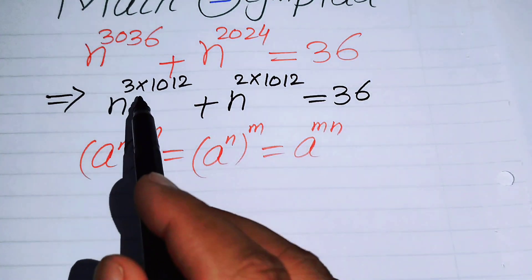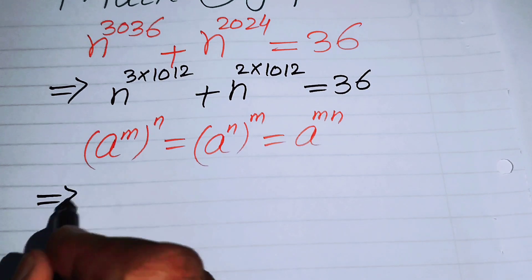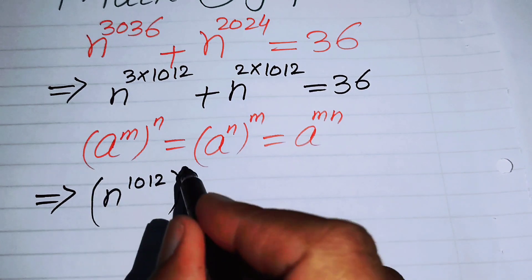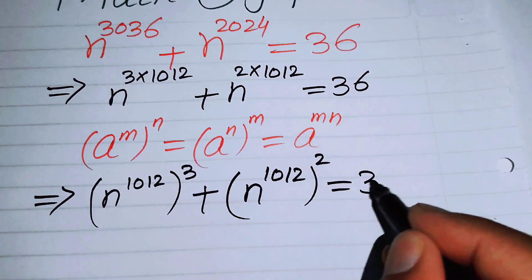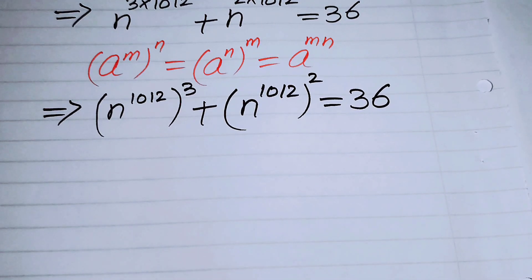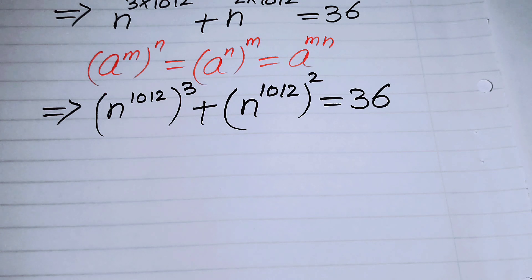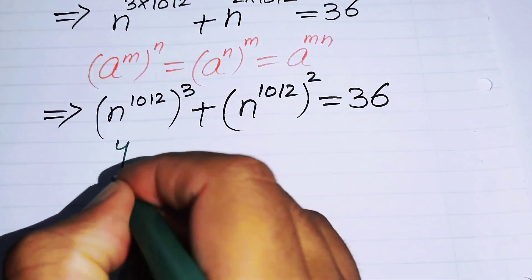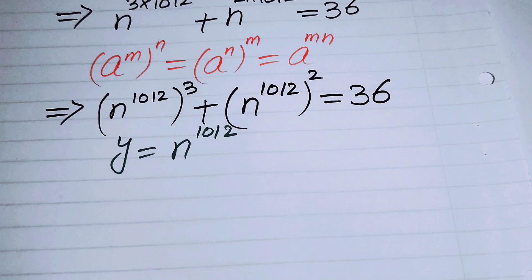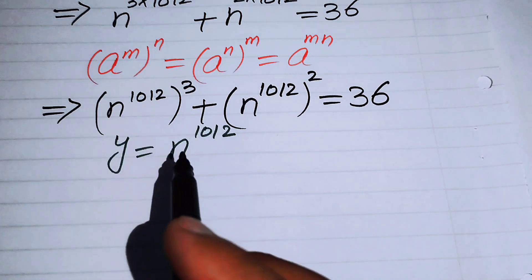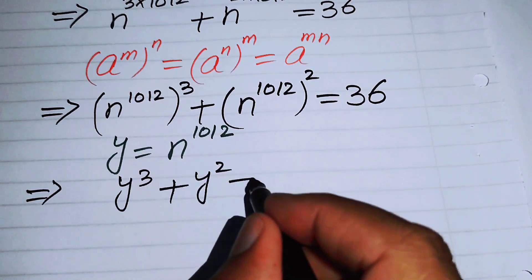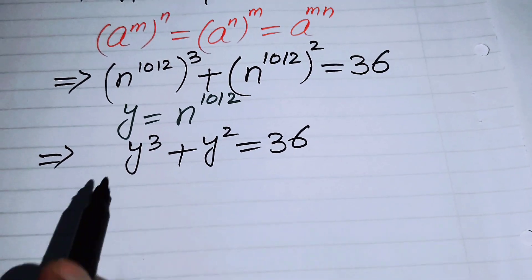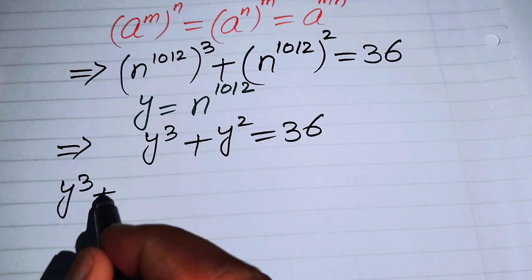Using this law, we can write the equation as (n^1012)³ + (n^1012)² = 36. Now we make a substitution to convert this exponential equation into cubic form. Let y = n^1012, so the equation becomes y³ + y² = 36.